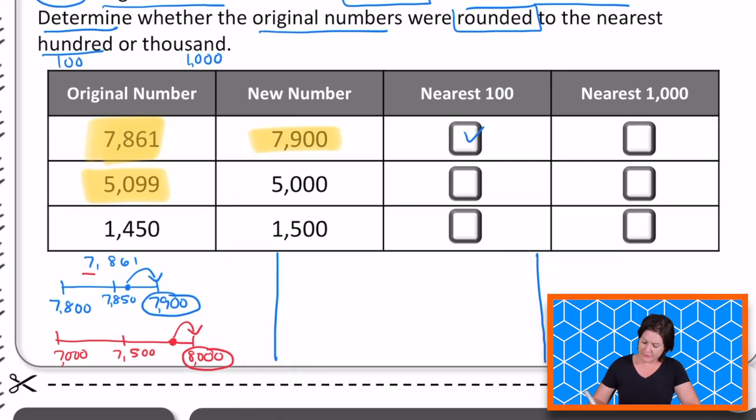We have 5,099. The new number that has been created is 5,000. So are we rounding to the nearest hundred or thousand? My guess is to the nearest thousand because 5,099 is pretty close to 5,000. But let's prove it using a number line.